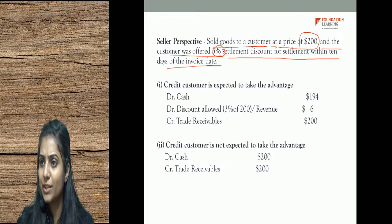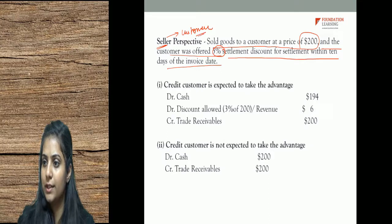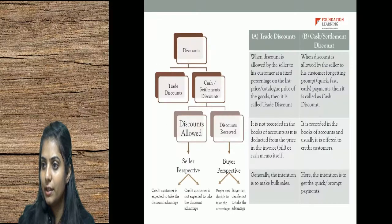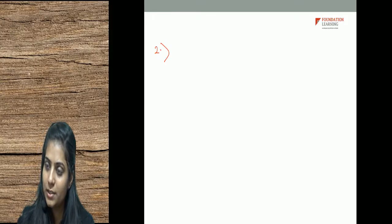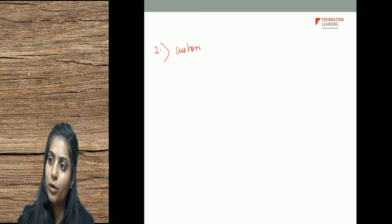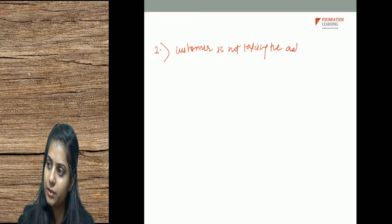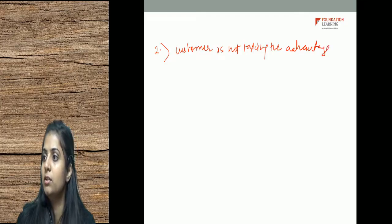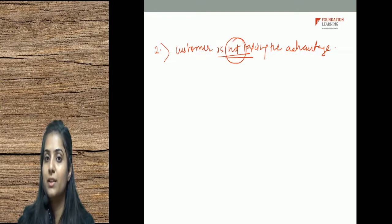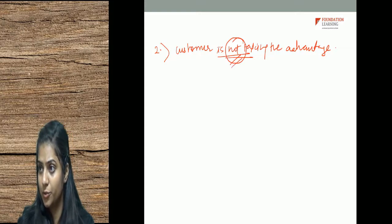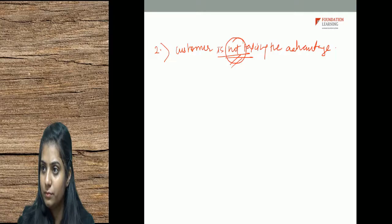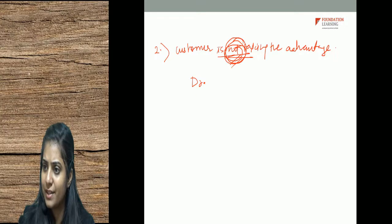This is the discount allowed case — the seller side, where I allowed discount to the customer. The second case is when the customer is not taking the advantage of the discount. In that case, a very simple entry is passed: debit cash account, credit trade receivables — $200. The customer doesn't have money for early payment and wants to pay on credit terms.